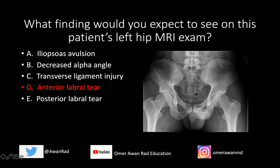This is a nice example of what CAM type femoral acetabular impingement would look like. If we take a look here closely at the left hip, notice that at the femoral head and neck junction, there's a bump or an osseous protuberance at the femoral head and neck junction, which is suggestive of the CAM type of femoral acetabular impingement.